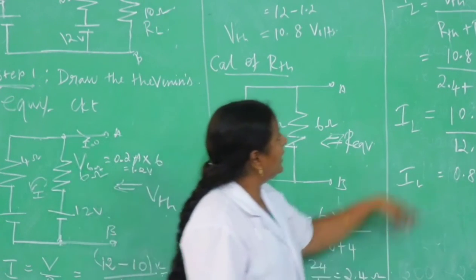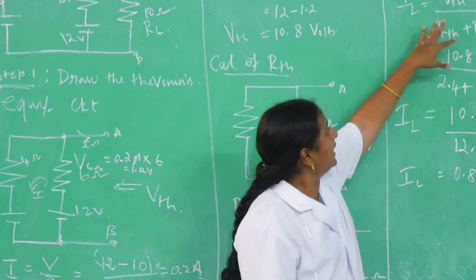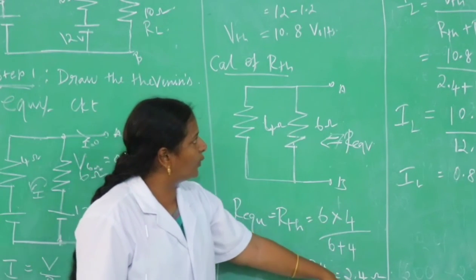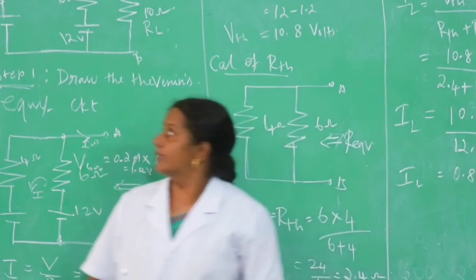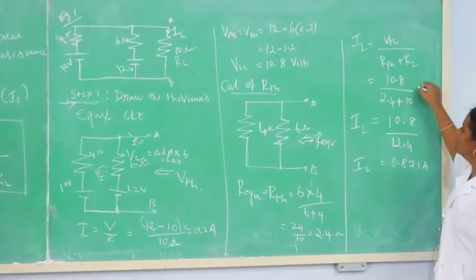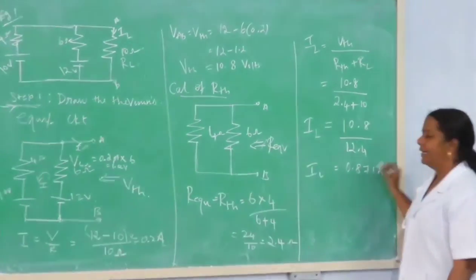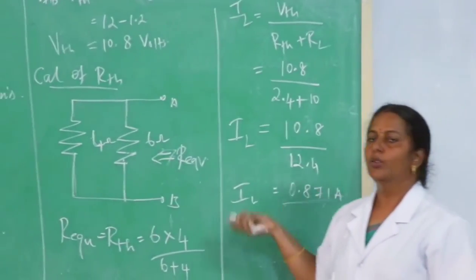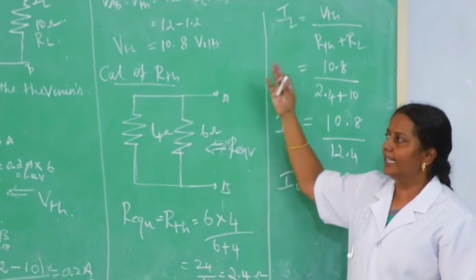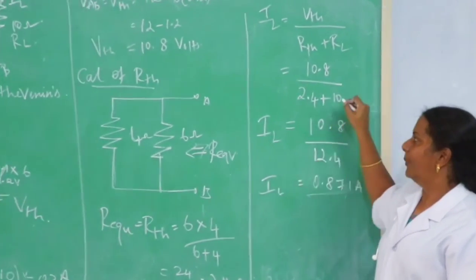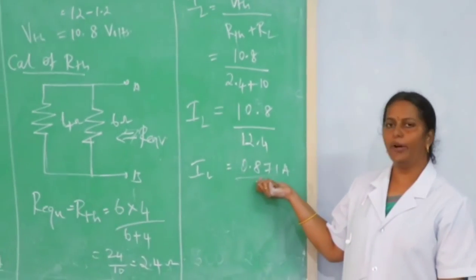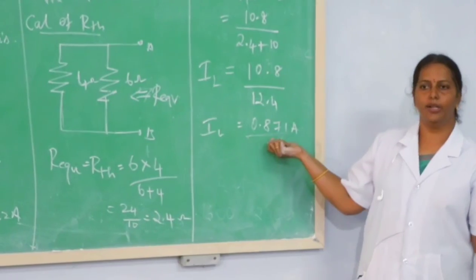Now we are going to calculate the load current according to the formula: V TH divided by R TH plus RL. R TH is 2.4 Ohm and RL is 10 Ohm. Applying the values, we get the load current as 0.871 ampere. So, whatever may be the network, just replace it by an open circuit, calculate V TH, kill the sources and calculate R TH, apply the formula and calculate the load current. Total load current IL equals 0.871 ampere. Thank you.